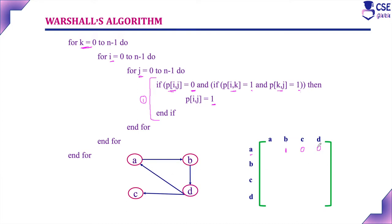Next, consider vertex B. There is a path from B to D, so make that position 1. The remaining positions — B to A and B to C — have no path, so mark them 0. For vertex C, there is no path to D, B, or A, so all positions are 0. For vertex D, there is a path from D to A and D to C, so make D-to-A as 1 and D-to-C as 1. The remaining positions are 0.